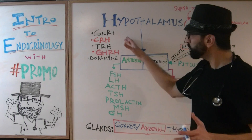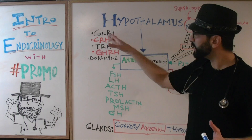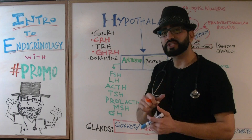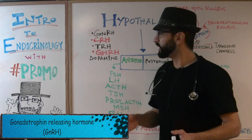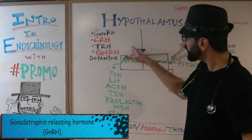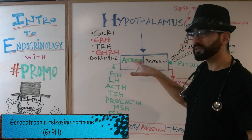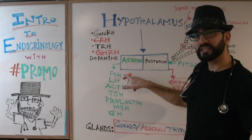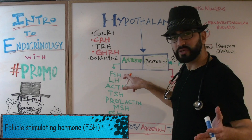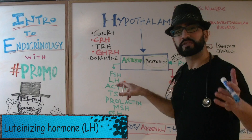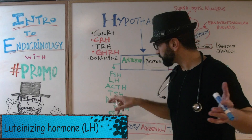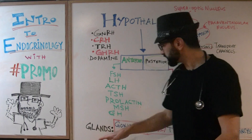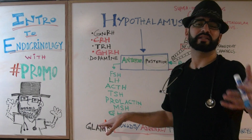Starting from the top, the first hormone the hypothalamus releases is called GnRH — gonadotropin releasing hormone. GnRH works directly on your anterior pituitary gland, releasing FSH (follicle stimulating hormone) and LH (luteinizing hormone). These hormones then work on the gonads — the testes in males and the ovaries in females.